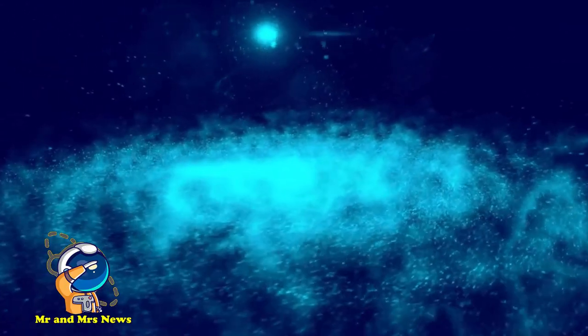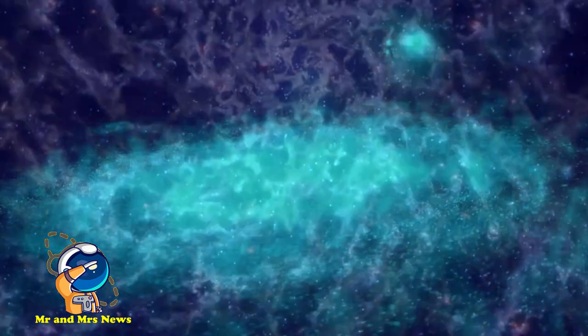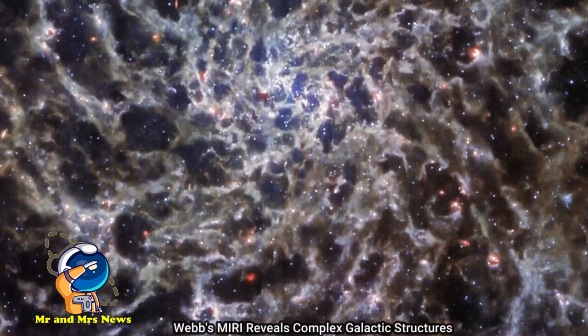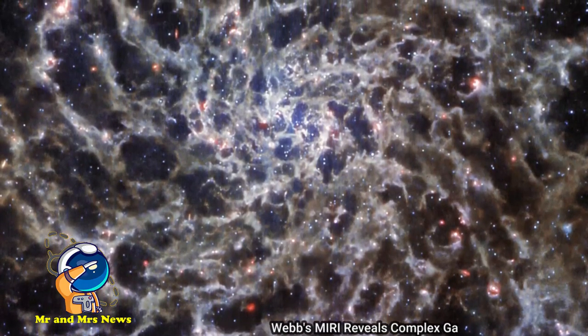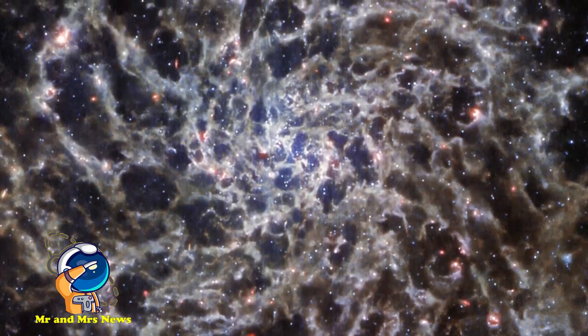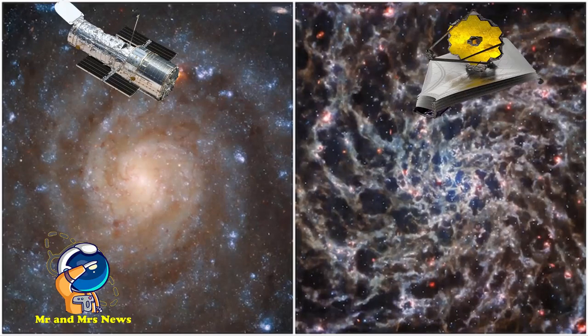Dalam rilisnya, Badan Antariksa Eropa membandingkan gambar teleskop James Webb dengan pemandangan galaksi lain yang memukau. Gambar dari teleskop luar angkasa Hubble menunjukkan daerah gelap yang tampaknya memisahkan lengan spiral IC5332.